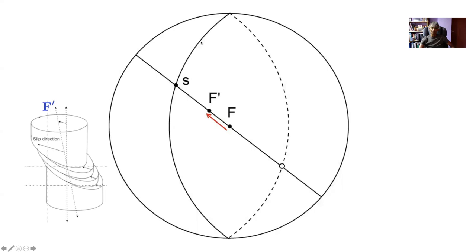On the stereographic projection, the slip plane is shown in the northern hemisphere and its trace in the southern hemisphere. The force axis and F' are also plotted, and as deformation proceeds, F' moves towards the shear direction S, which lies in the slip plane.